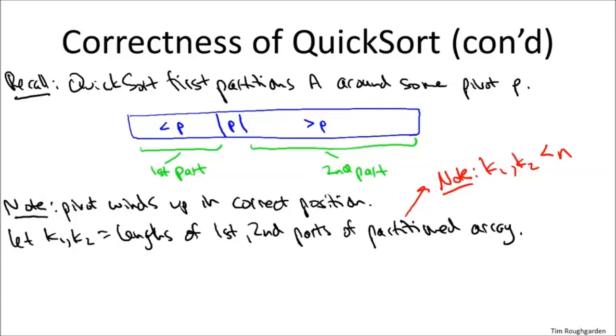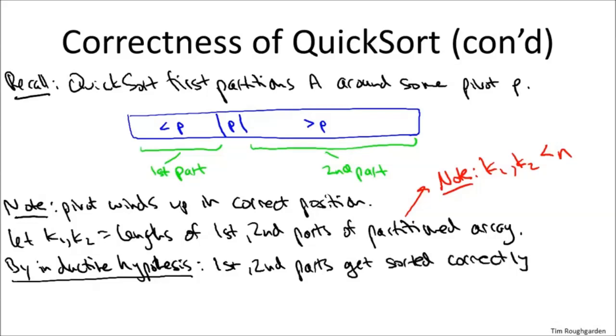That means we can apply the inductive hypothesis, which says the QuickSort never makes a mistake on an array that has size strictly less than n. That implies that our two recursive calls to QuickSort, the one to the first part and the one to the second part, don't make mistakes. They're guaranteed to sort those subarrays correctly by the inductive hypothesis.